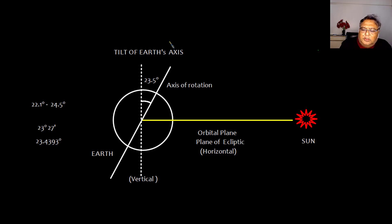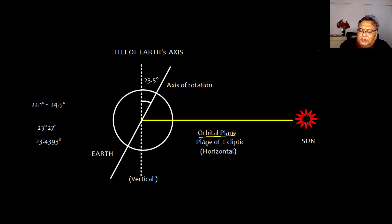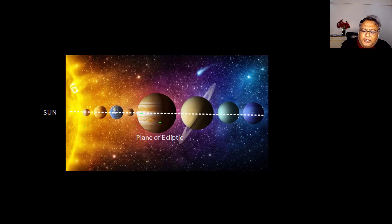Let us talk about tilt of the earth's axis. In order to understand tilt of the earth's axis, we need to understand what is the orbital plane. The orbital plane is the plane about which earth rotates around the sun. This orbital plane is same for all the planets and is called the plane of ecliptic.